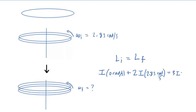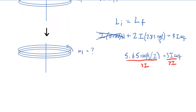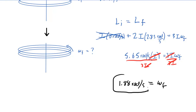We multiply 3I by the final angular speed of the three disk system. The zero term drops out. Multiplying 2.83 by 2 brings us back to 5.65 radians per second times I on the left, equal to 3I times the final angular speed on the right. Dividing both sides by 3I, the I's cancel, so we simply compute 5.65 divided by 3, which gives 1.88 radians per second — the final angular speed of the three disk system and the answer to part B.